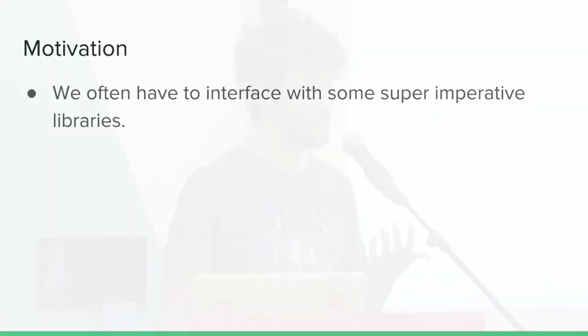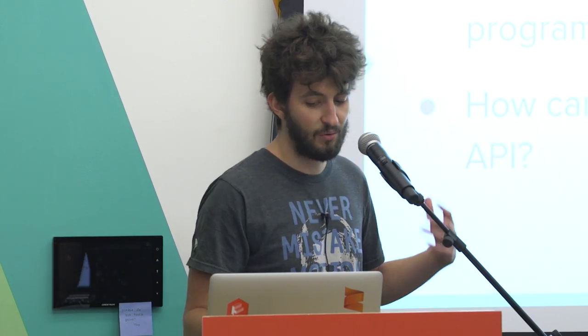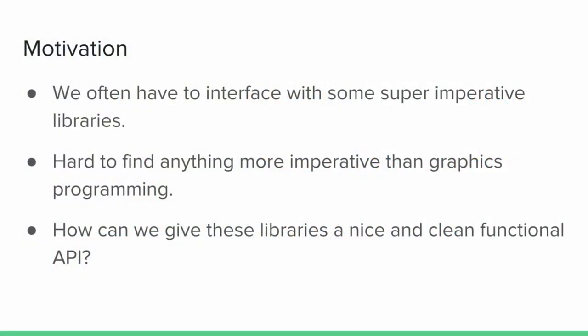Without further ado, I'm going to start with the motivation for this talk. Tagless final is an encoding — why would we actually need it, or what is it good for? As functional programmers, we don't want side effects, but we still often have to interface or work with super imperative languages. For this talk, I chose to use a library called WebGL, which is probably the most imperative thing around — graphics programming. So how can we give these libraries a nice and clean functional API? That's the main question of this talk.